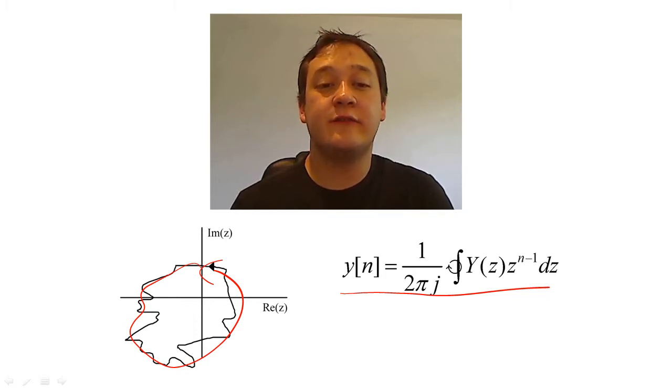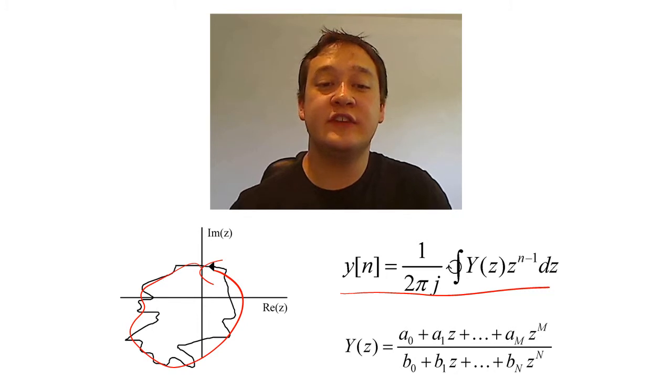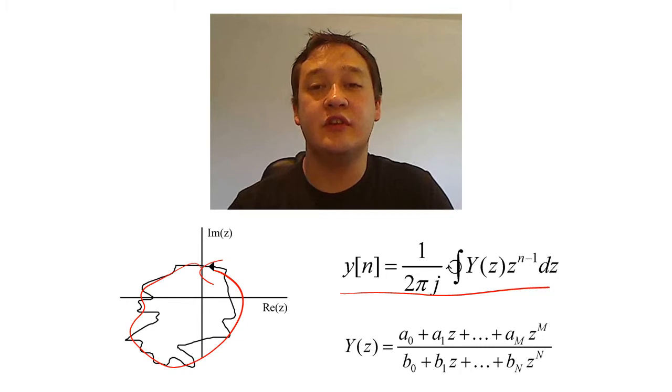This method is particularly powerful if the Z-transform sequence is a rational function, i.e., a ratio of polynomials.